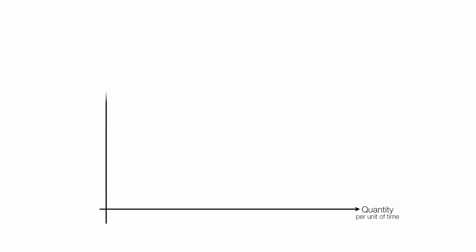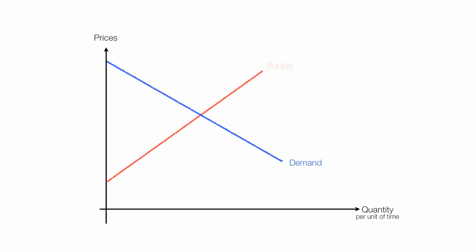Start with a supply and demand curve. I put quantity on the horizontal axis — quantity per unit of time — and price on the vertical axis. I'll draw the demand curve and now the supply curve. The point where they intersect is the equilibrium price and equilibrium quantity.